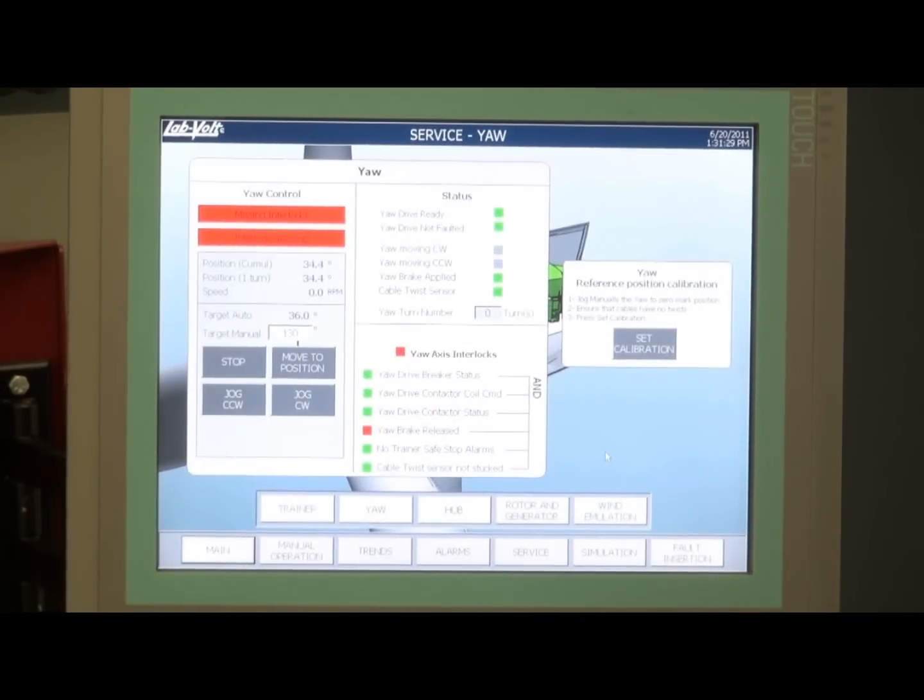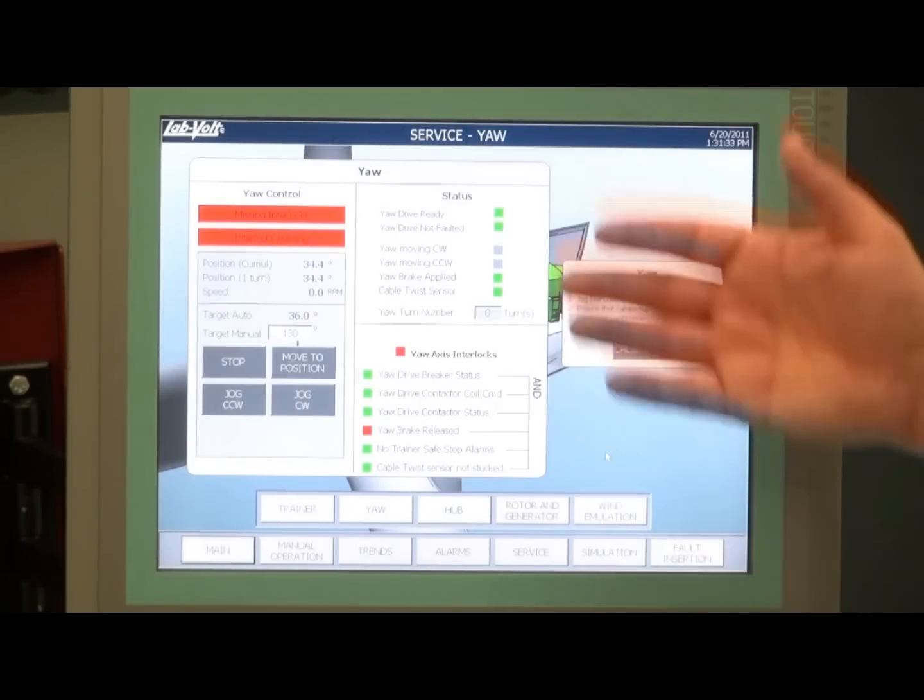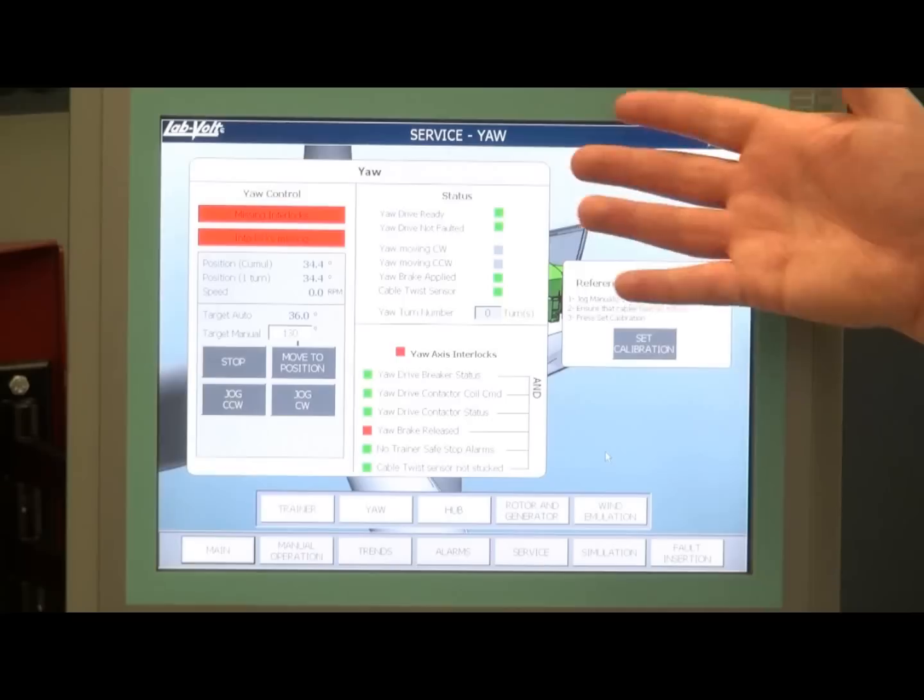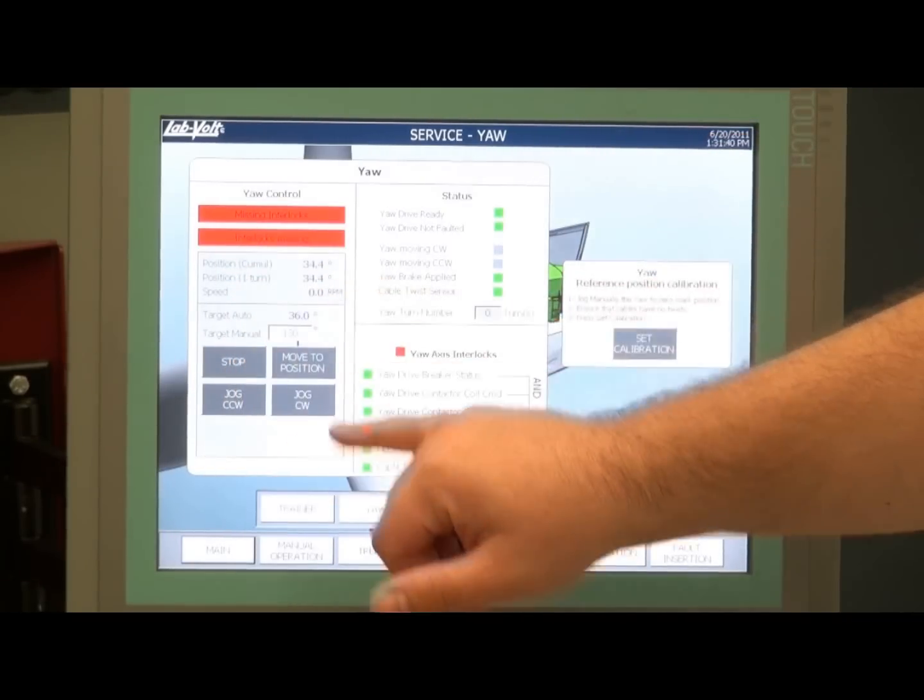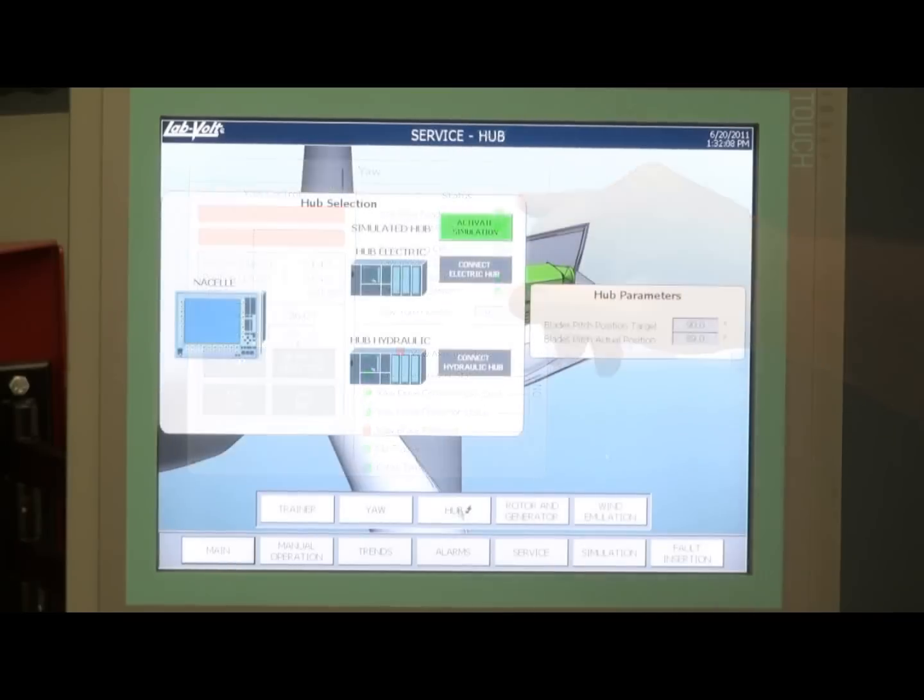Services windows are also accessible for the different parts of the nacelle, like the yaw service window, where you can see all the important parameters in the yaw operation. The yaw can even be calibrated from this section. If the user has one of the two hub trainers from LabVault, the hub services window permits the user to connect one of them to the nacelle trainer, so the blade pitch command is actually performed on the hub trainer, and the feedback is sent back to the nacelle.